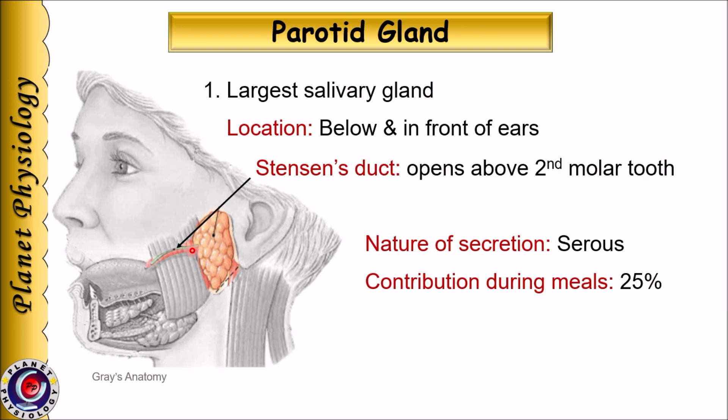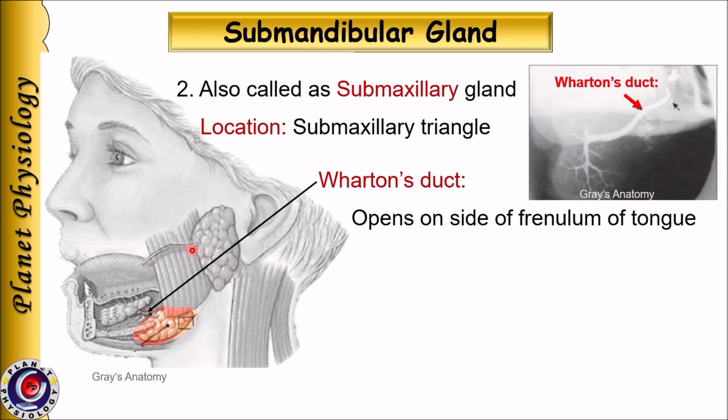Secretion of the parotid is rich in water and electrolytes and lacks mucin, so this secretion is called serous secretion. It contributes 25% of the total salivary secretion during meals.